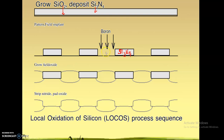The next step is the crux of the process: we grow a field oxide layer. To grow the field oxide layer we use the oxidation process and allow it to grow for some time, ending up with a thick layer of oxide. This thick layer is referred to as field oxide. After that, the isolation process is done and you strip off the nitride and the pad oxide. This is the end of the process sequence.